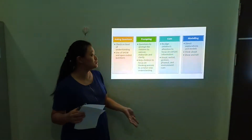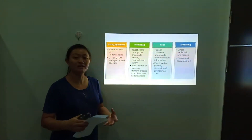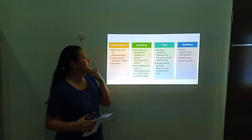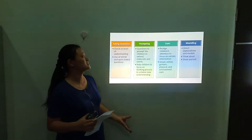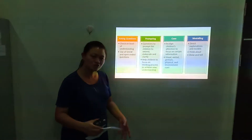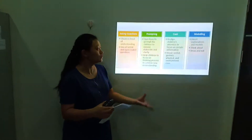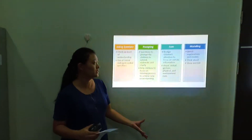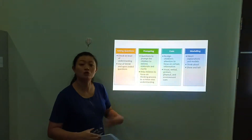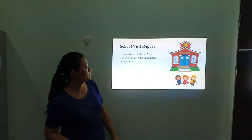Visual, verbal, gesture, physical, and environmental cues can be used at different times. As for modeling, when teachers have tried all the methods above and the children still cannot grasp the concept, the teacher will resort to modeling — directly explaining and demonstrating to the children what they should do. Teachers can use think-aloud or show-and-tell methods to model for the children.